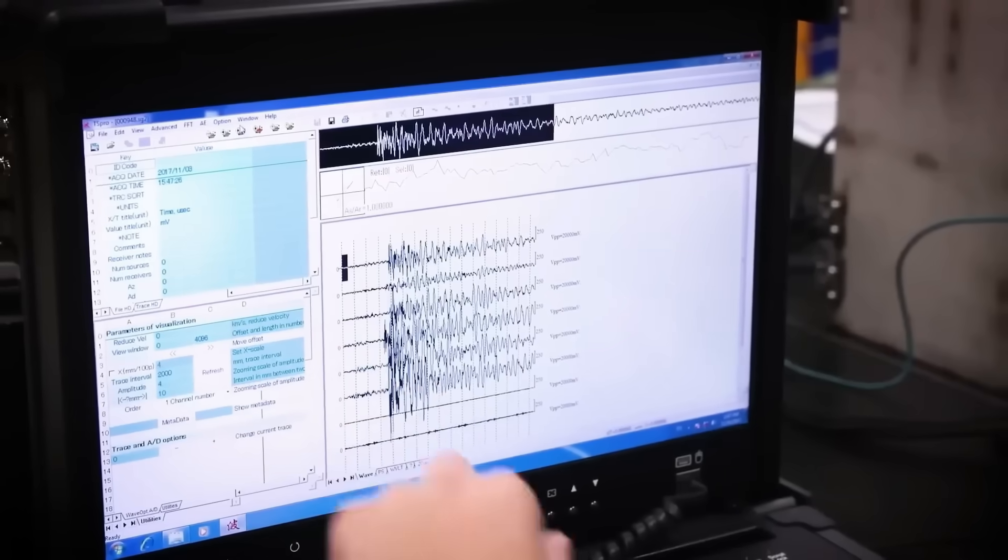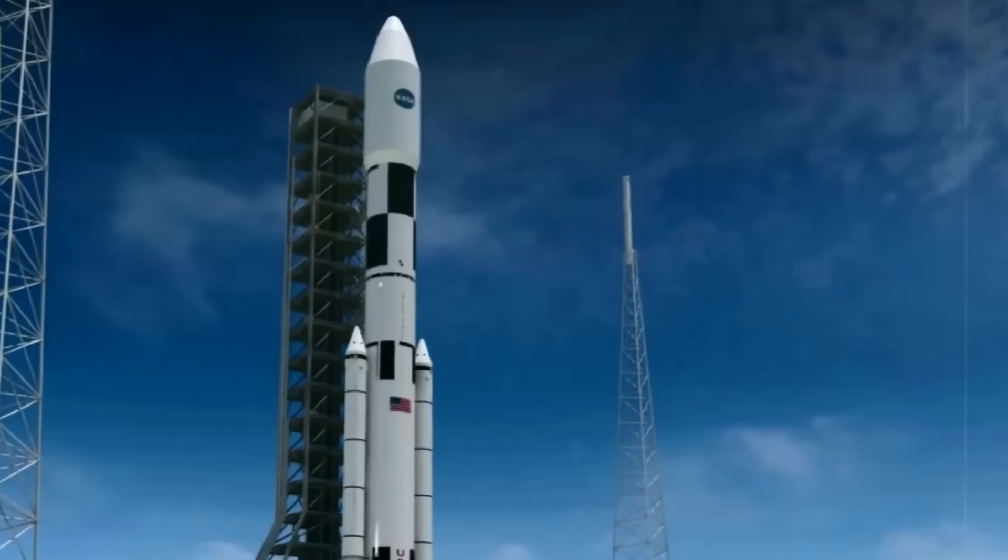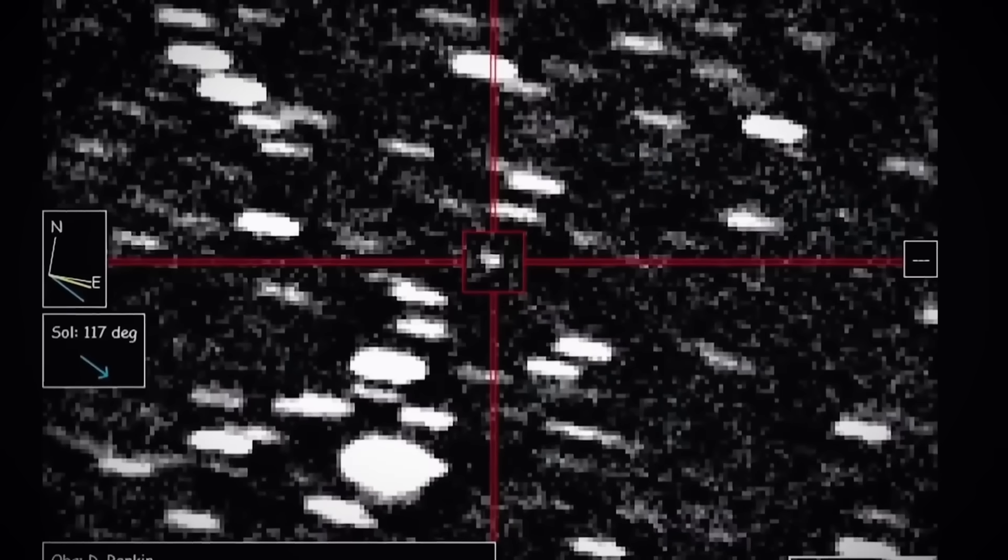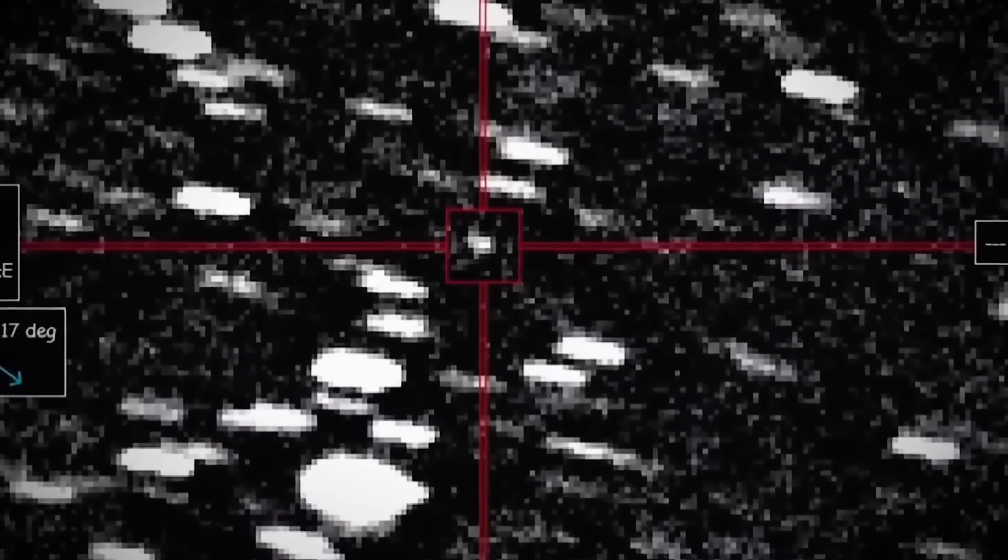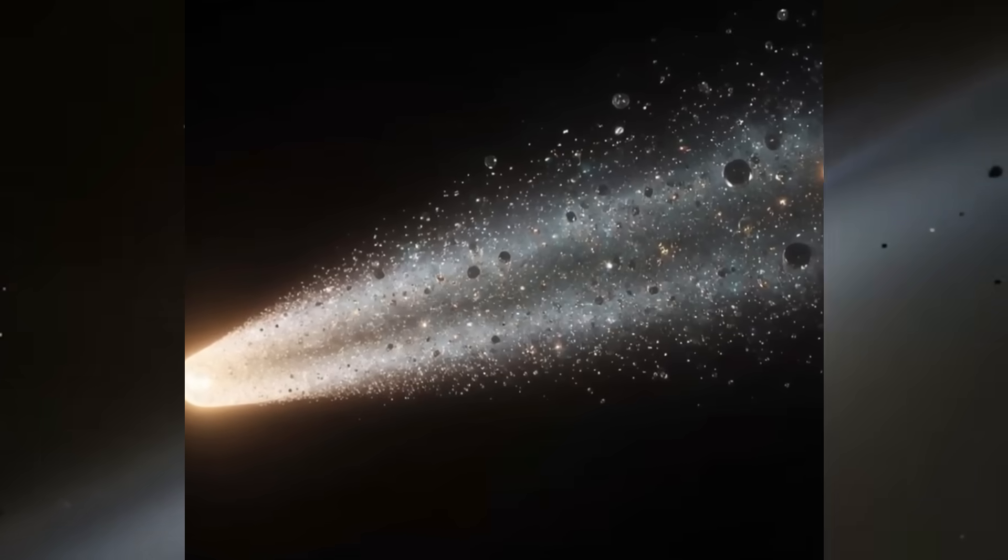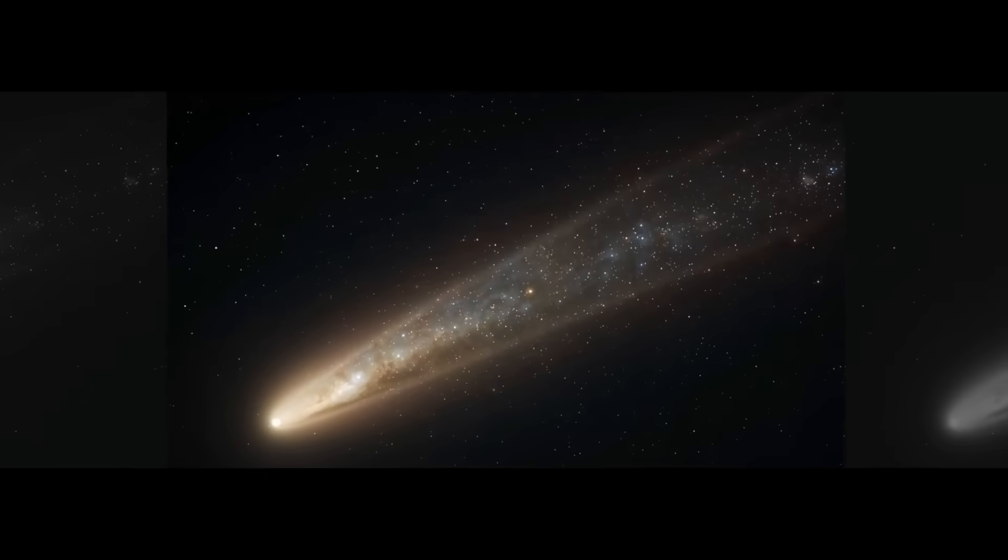But the science angle is even more mind-blowing. Multiple sources suggest the Falcon 9 may have carried microprobes - not to hit 3i/ATLAS directly, but to dust sample its coma, that glowing cloud of gas and debris streaming behind the comet like a cosmic tail.